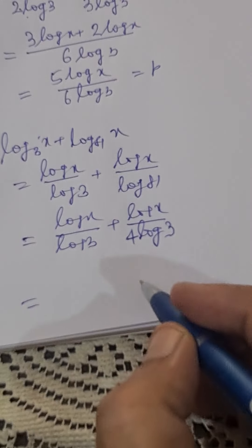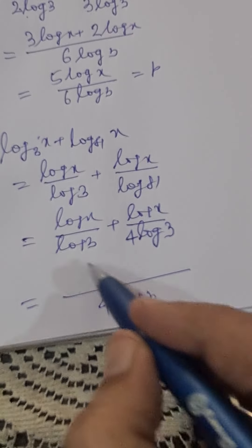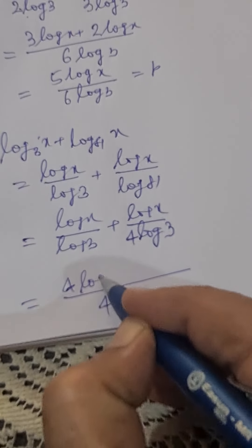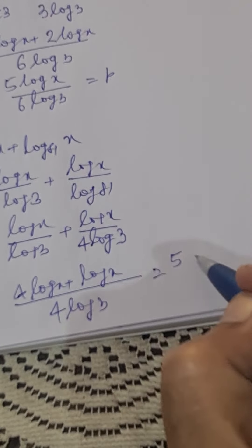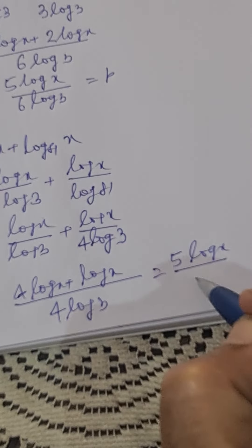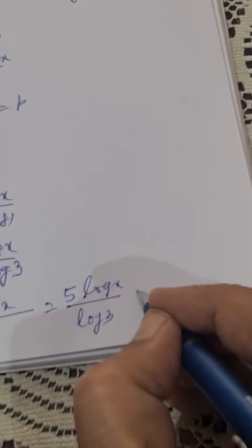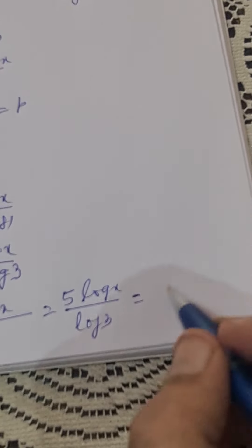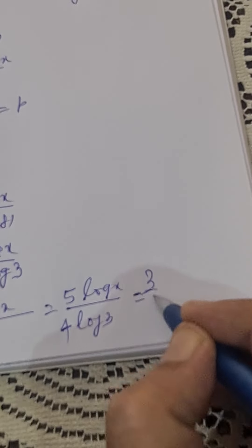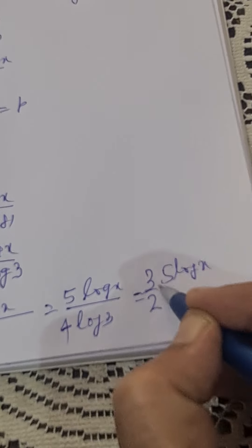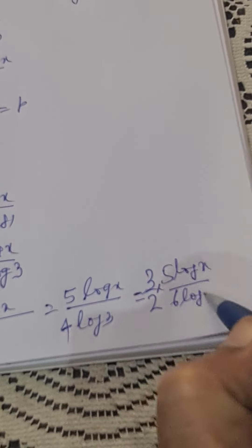So this we can write with LCM of log 3 and 4 log 3, which is 4 log 3. This gives us 4 log x plus log x, which we can write as 5 log x divided by 4 log 3.